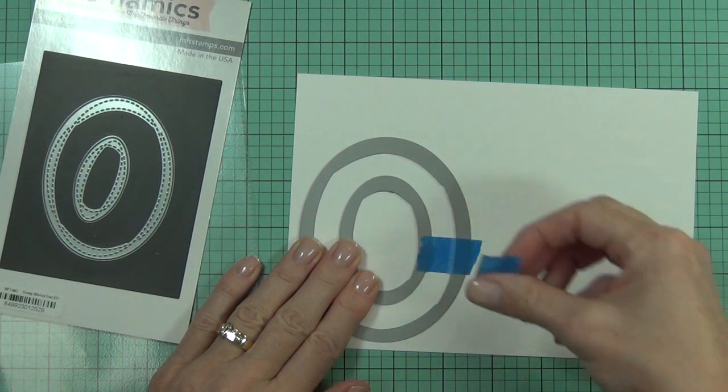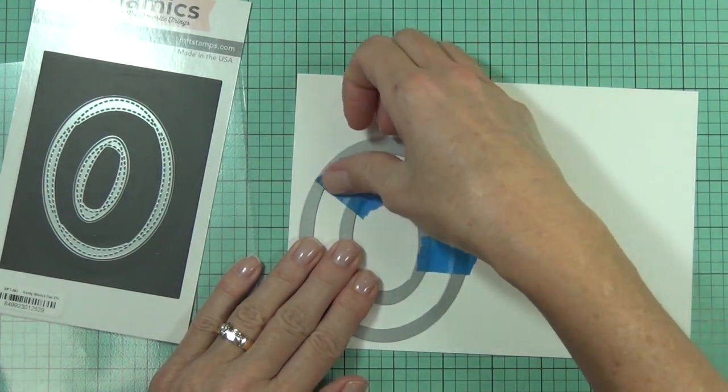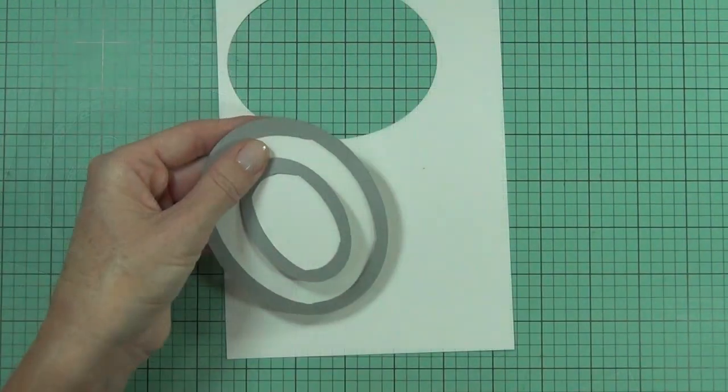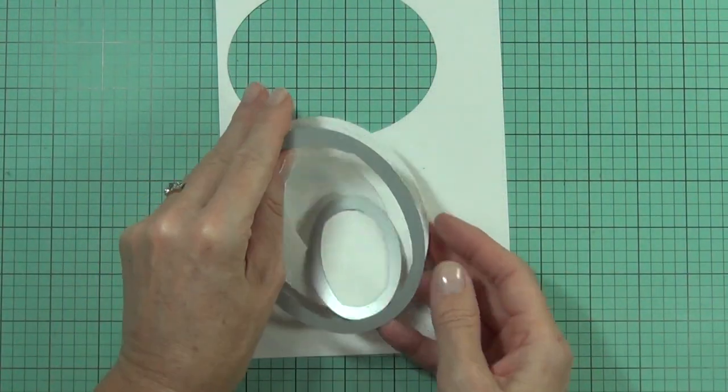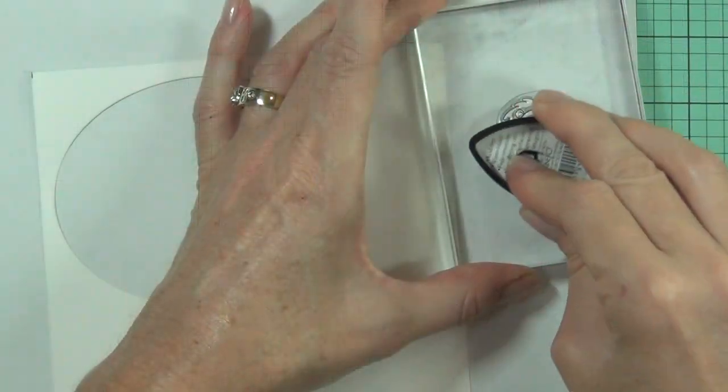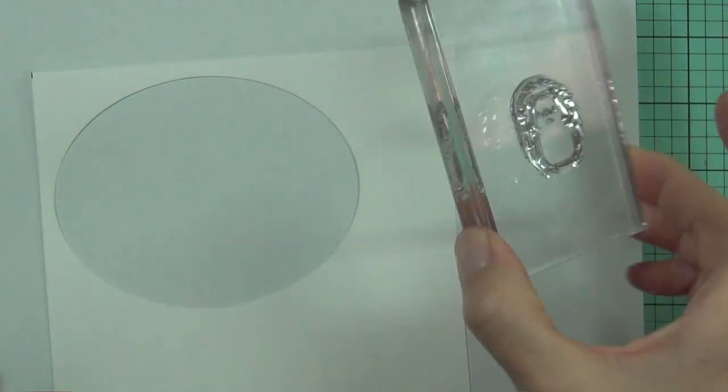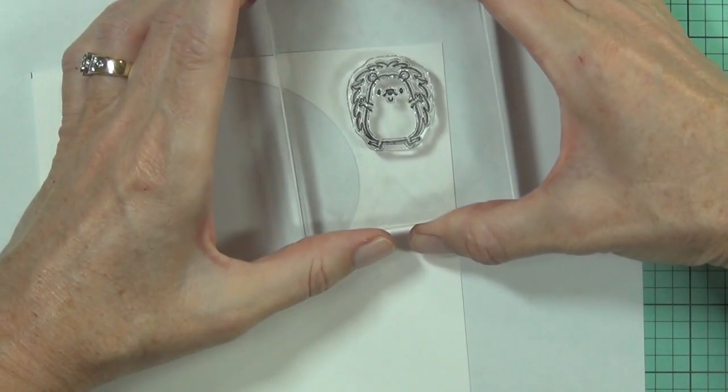Now I wanted my shaker frame to be nice and wide, so I haven't actually chosen two of the ovals that are right beside - I left a gap of one in between. That way I get this nice wide border on the outside of my oval shaker. I've just run that through my die cutting machine.